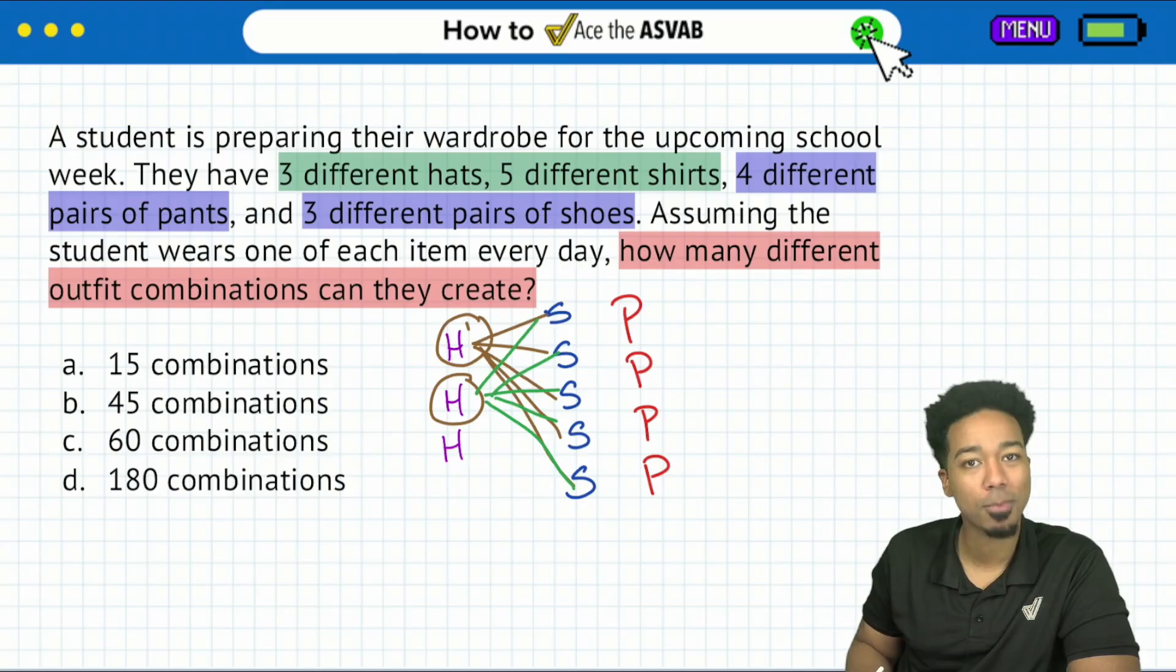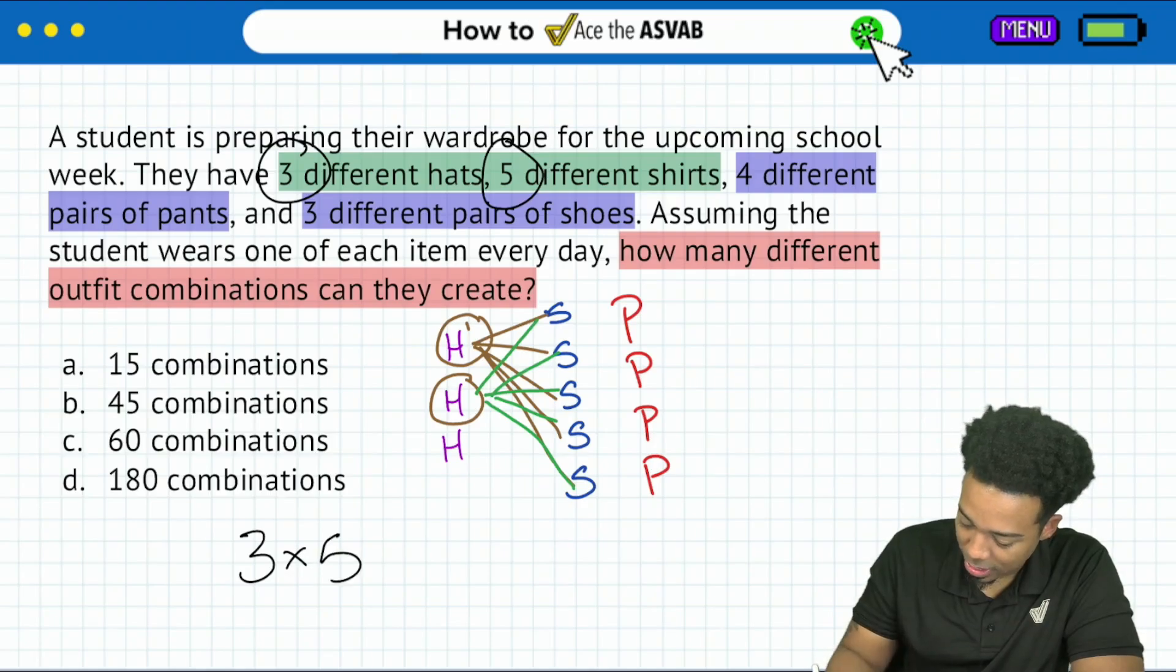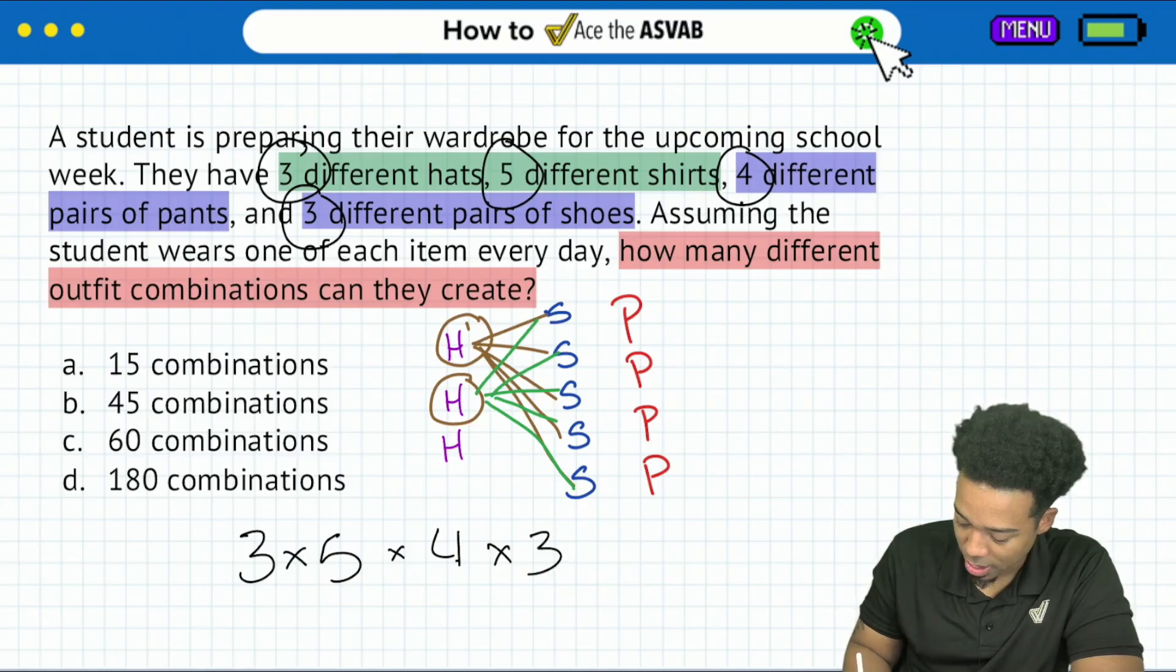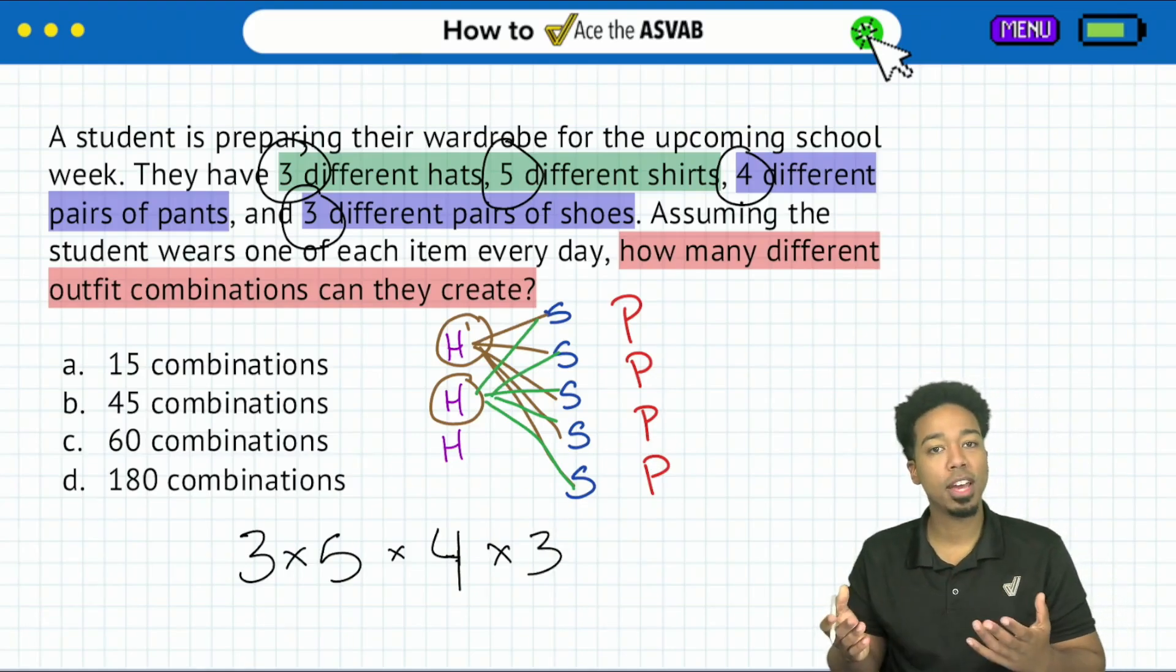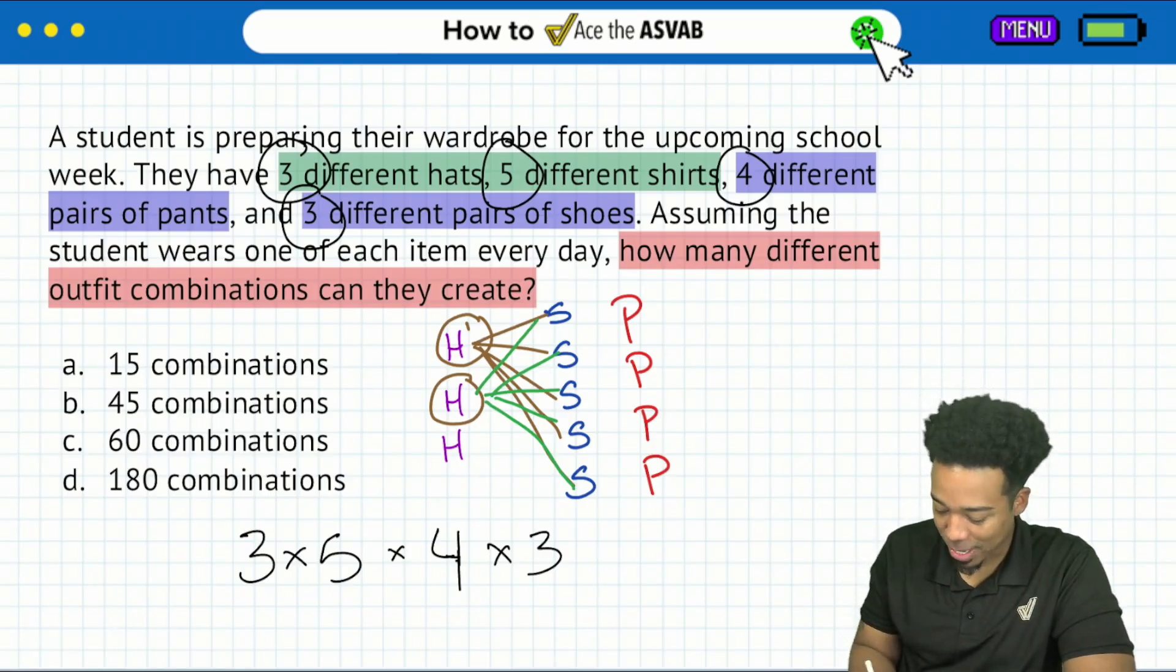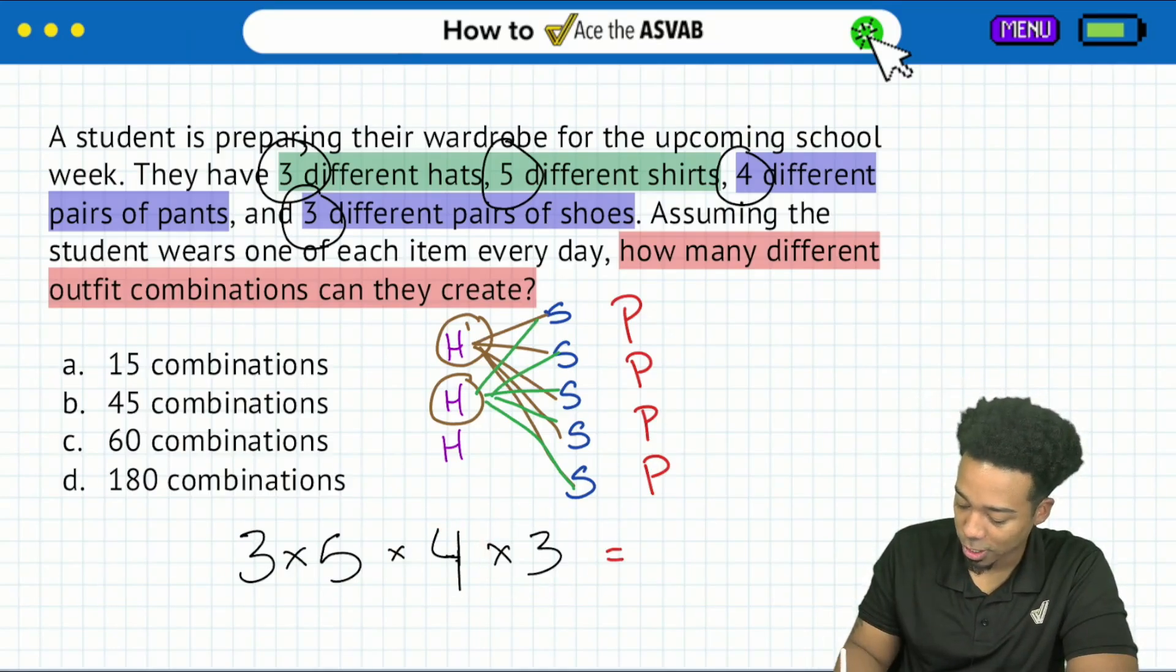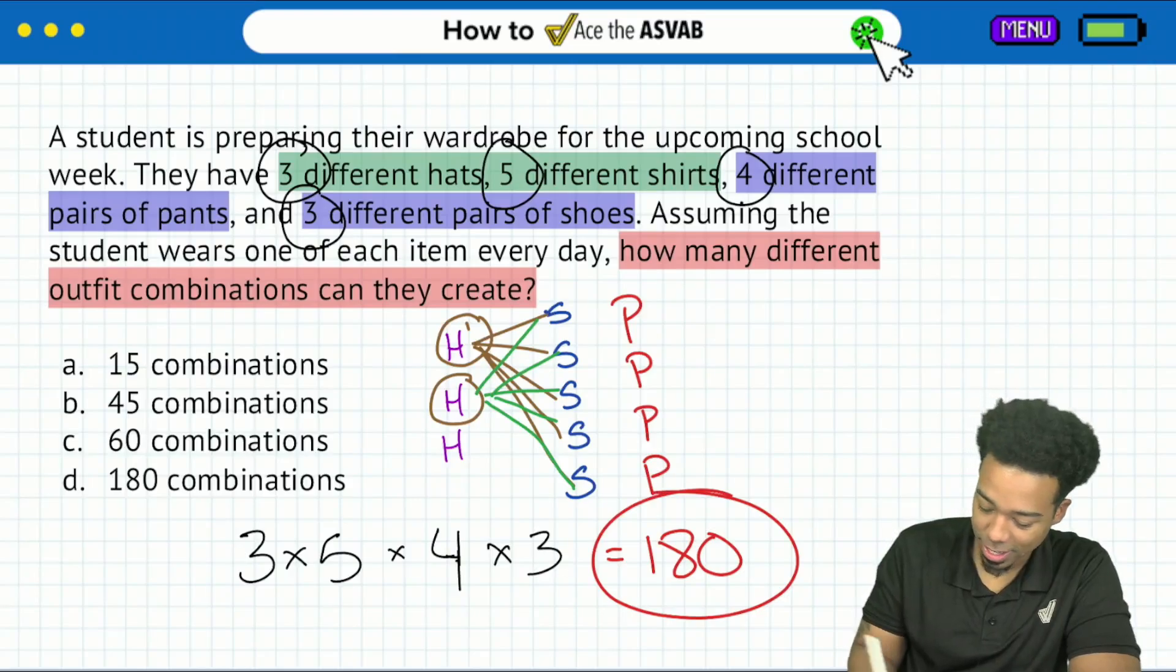here's how we solve it, my party people. We're just going to take three times five times four and then times three again. And there we go. When you multiply this, it'll give you all the different ways these can be combined. And that's going to be three times five. That's going to be 15 times four, 60 times three is one hundred and eighty. So there it is, my party people. And we are all good.